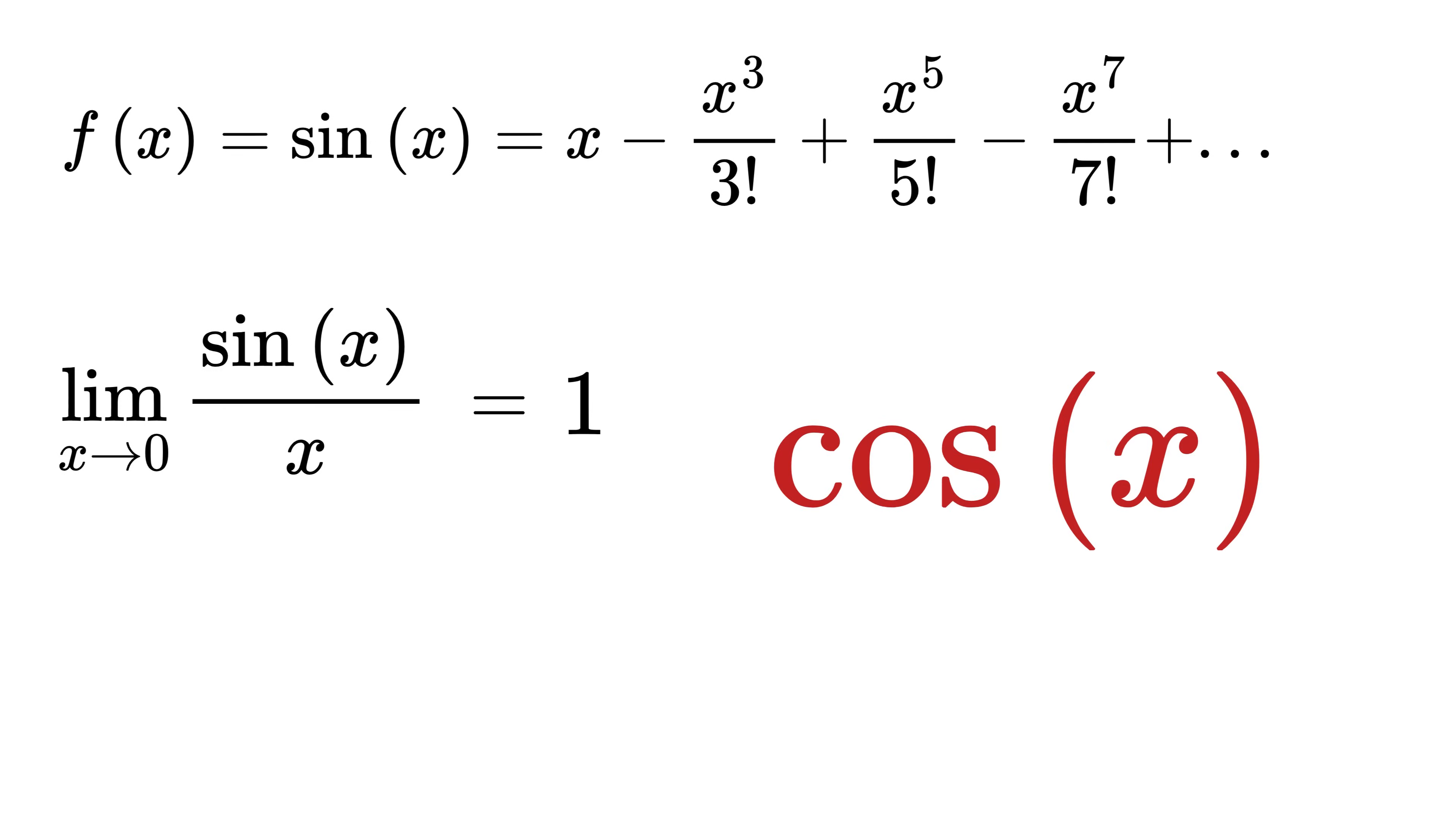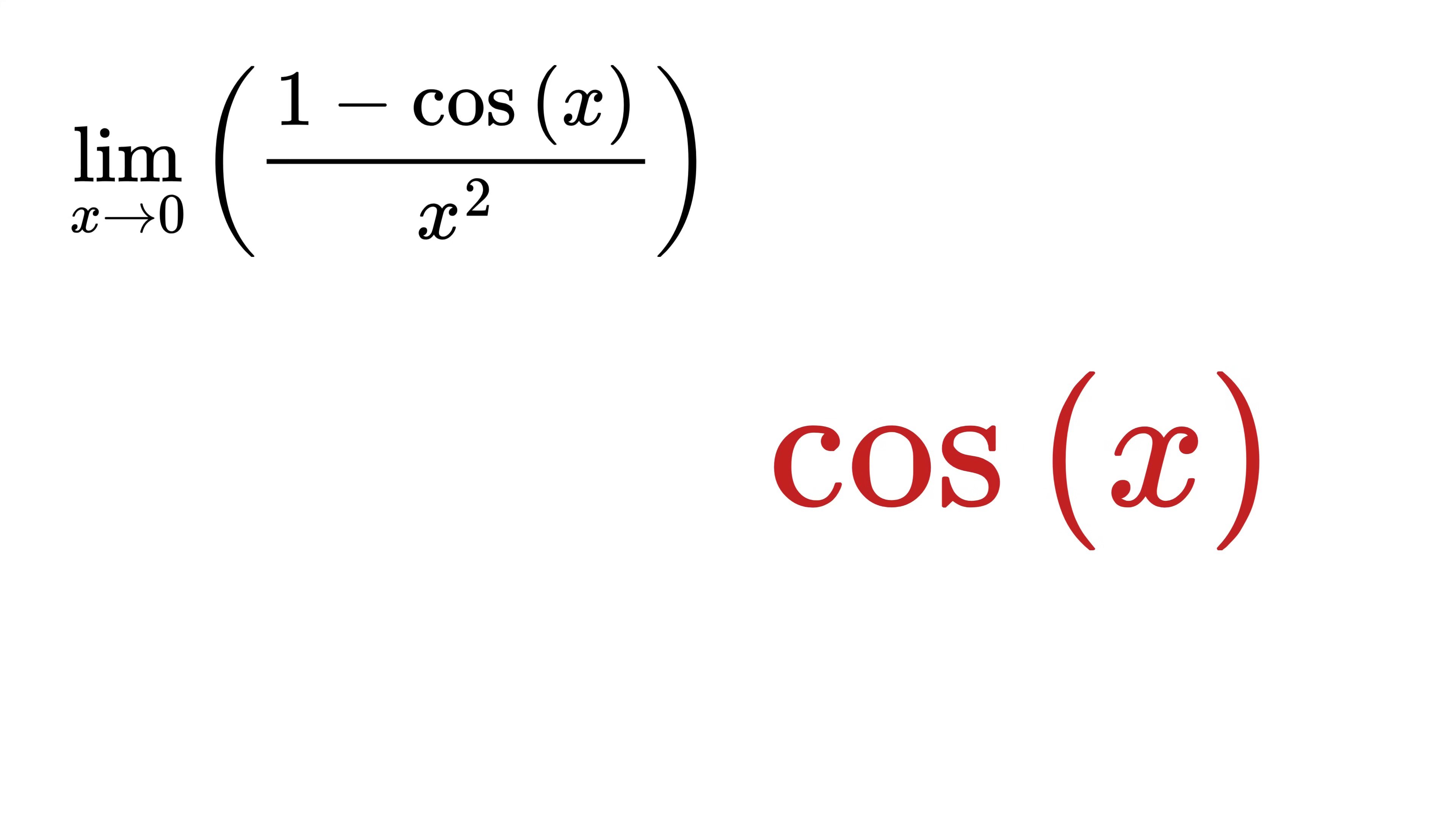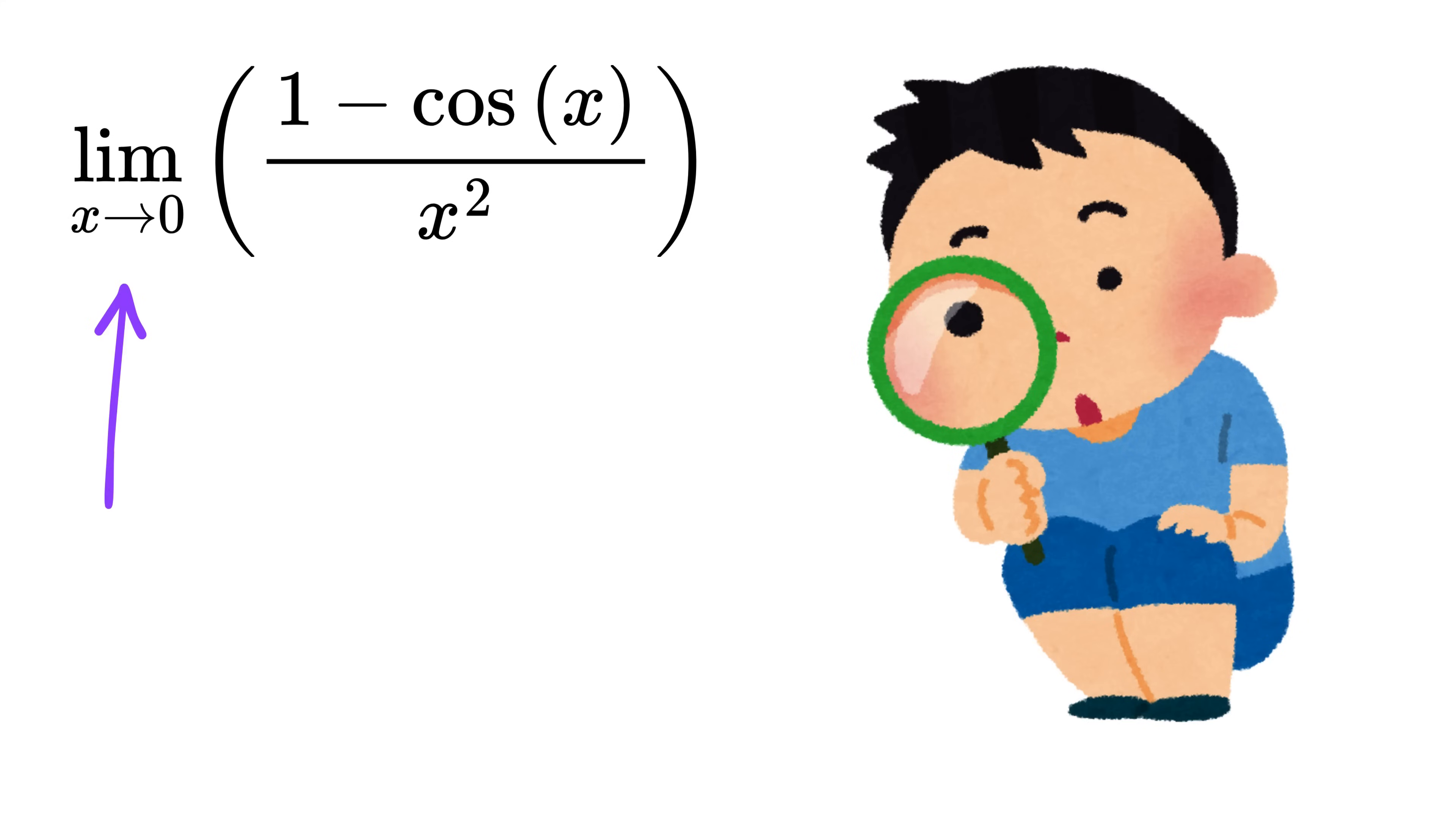Now a similar idea appears with cos(x). Your task is to explore the expression (1 - cos(x))/x² and see what happens as x goes to 0.